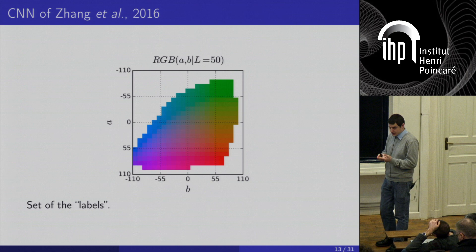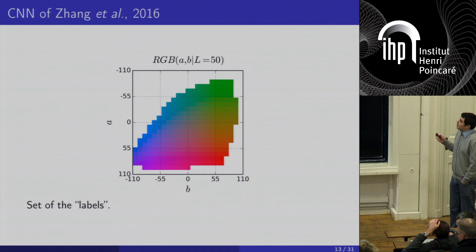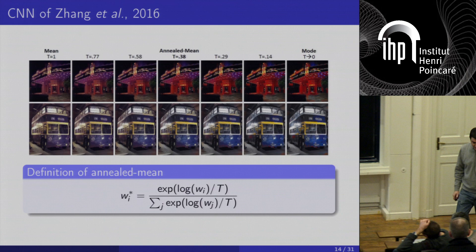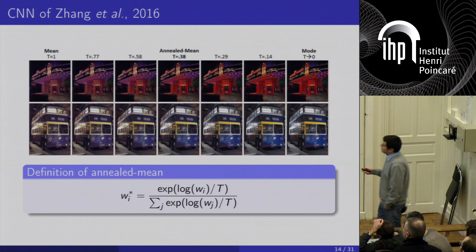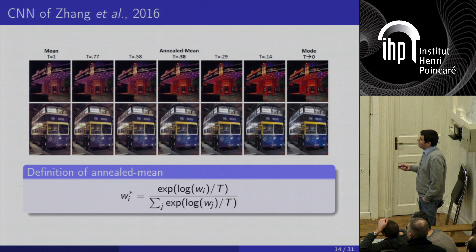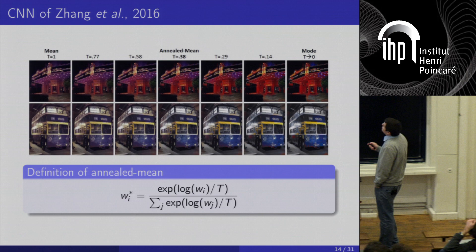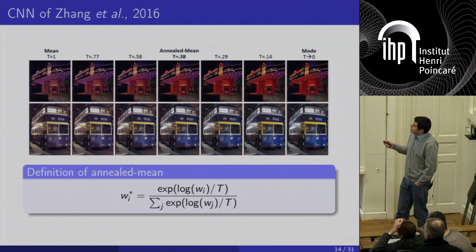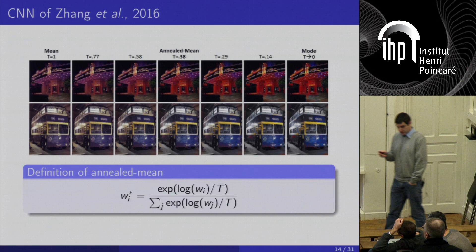What happens when using the annealed mean? If you use directly the mean, you get drab results. If you use the mode, you get shinier results but with halo effects. The annealed mean is a trade-off between the mean and the mode. With the typical parameter given by the authors, you get a trade-off — slightly drab but with halo effects not really visible. But this is not really satisfying; we can do better with a variational approach.